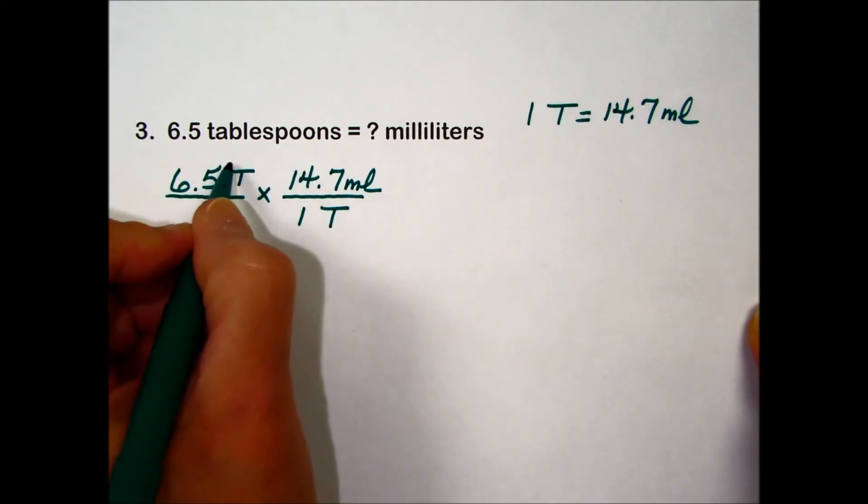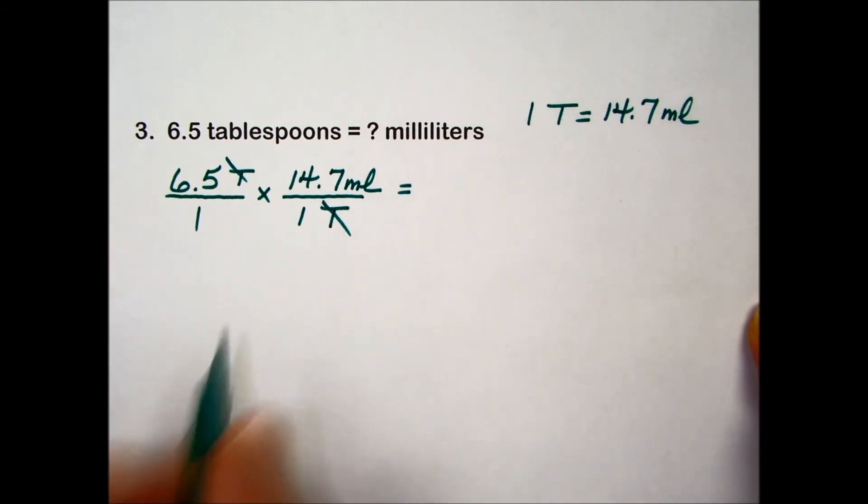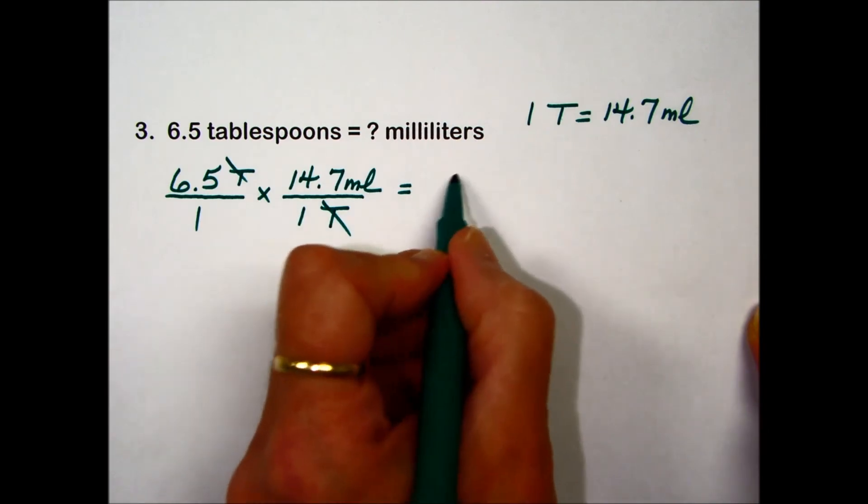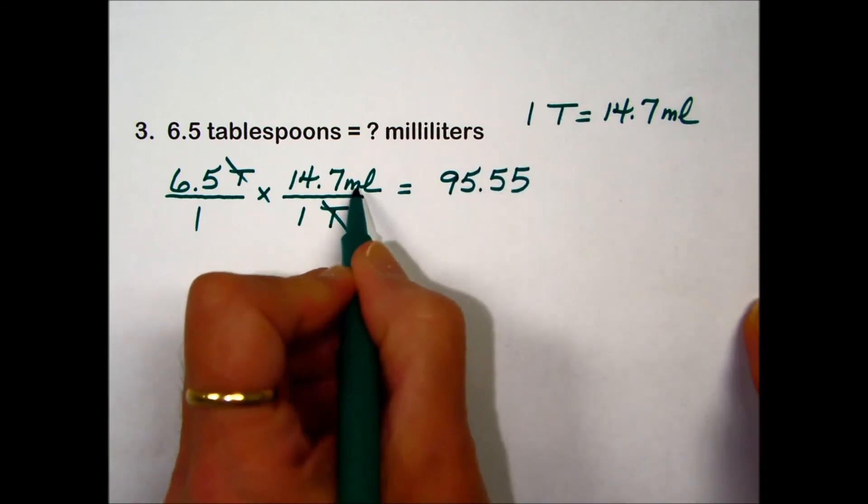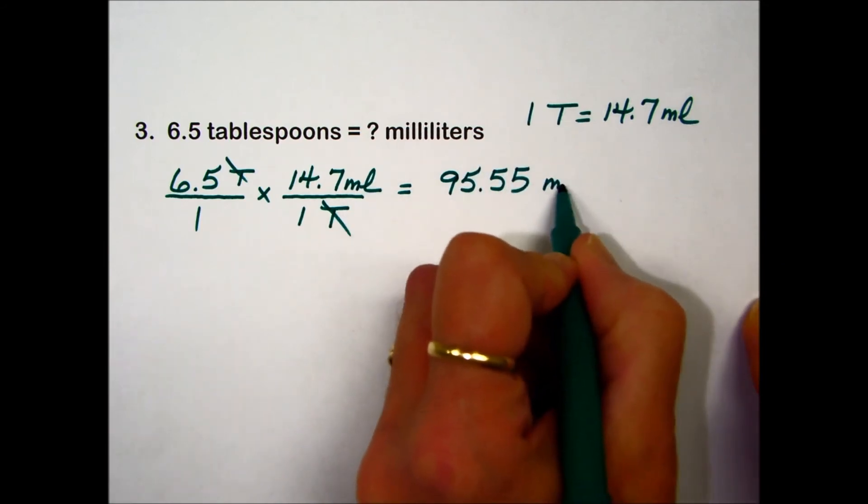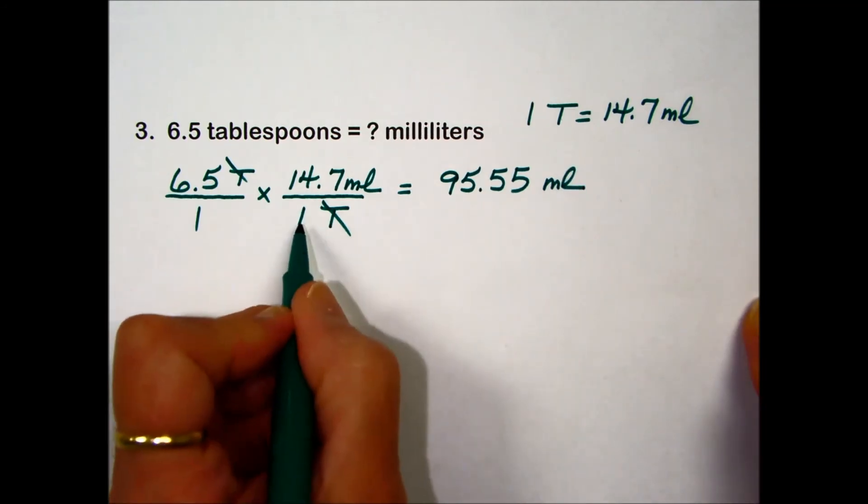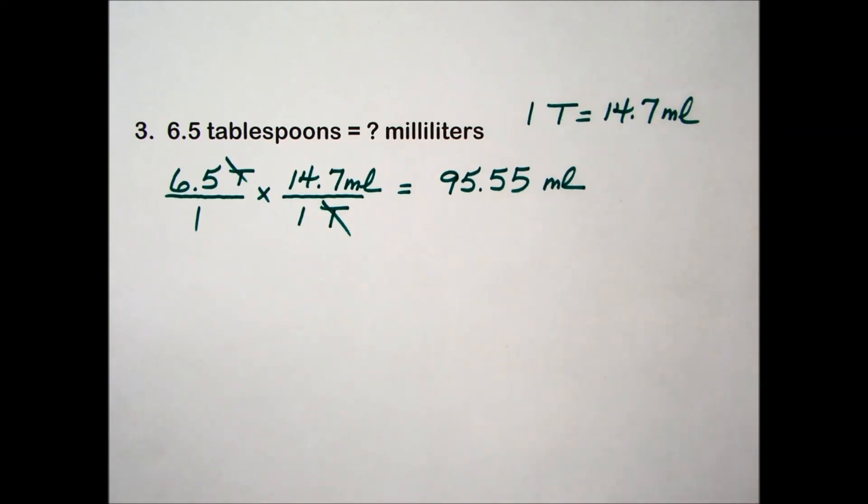Equal quantities over one another is equivalent to 1. But this conversion factor fraction is going to allow us to convert from one unit to another. Common factors cancel out if in the numerator and the denominator. This leaves us with a multiplication in the numerator. Multiplying 6.5 by 14.7 gives us 95.55. The units are milliliters. In the denominator we have 1. And when you take 95.55 divided by 1, we still have the same value.